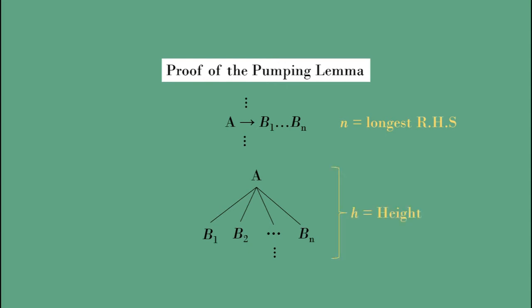So a tree of height H has at most N to the power H nodes, and hence the length of the string generated is at most N to the power H.